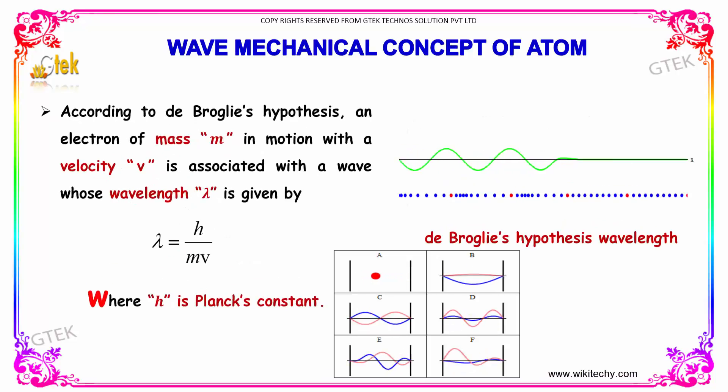If we talk about the wave mechanical concept of atoms, according to de Broglie's hypothesis, an electron of mass m in motion with a velocity v is associated with a wave whose wavelength λ is given by λ = h/mv, where h is Planck's constant.